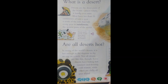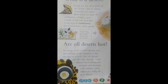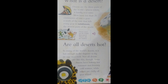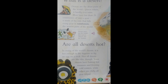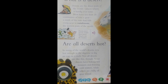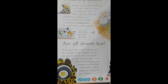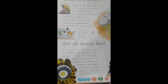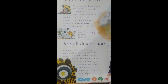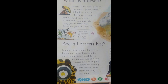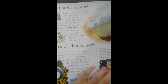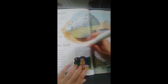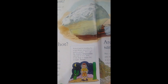In many of the world's deserts, it is hot enough in the daytime to fry an egg on a rock. Not all deserts are like this though — some deserts have baking hot summers and freezing cold winters, while others are chilly all year round.